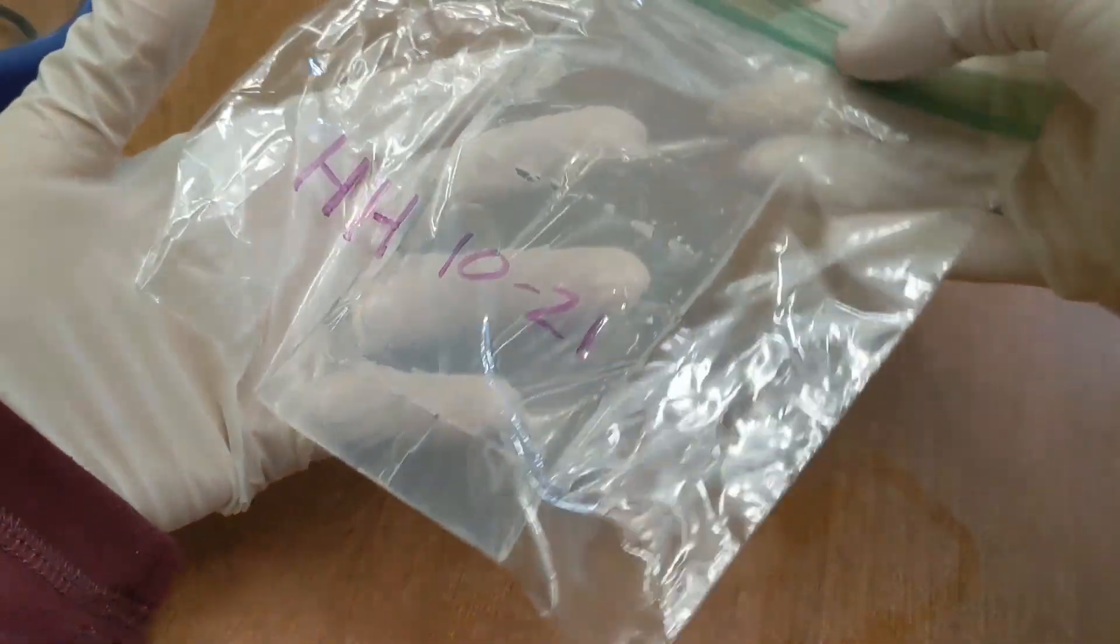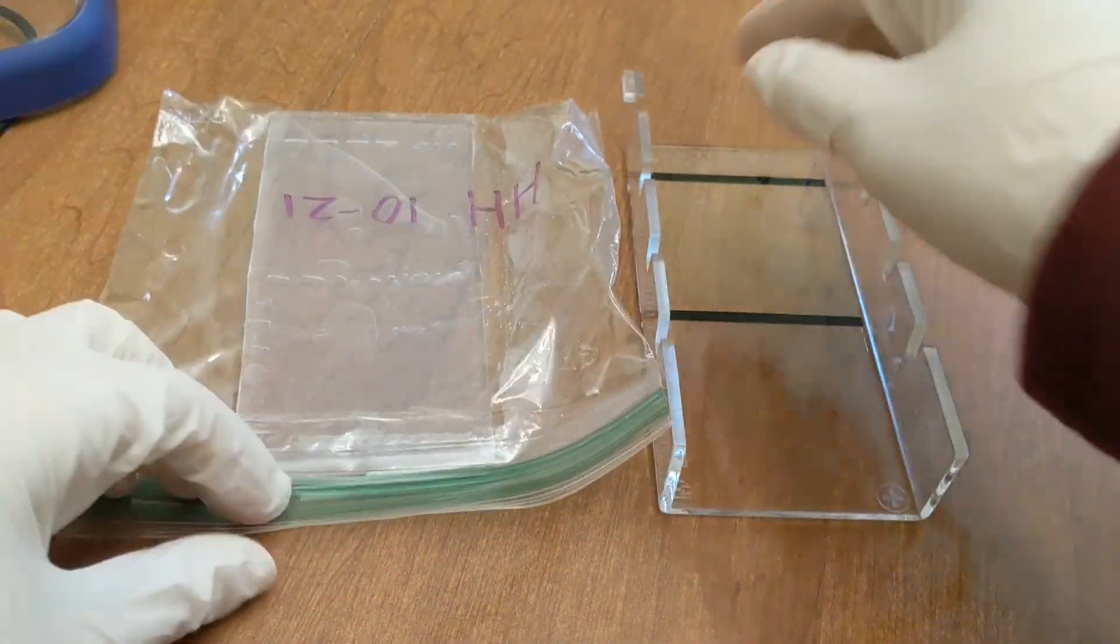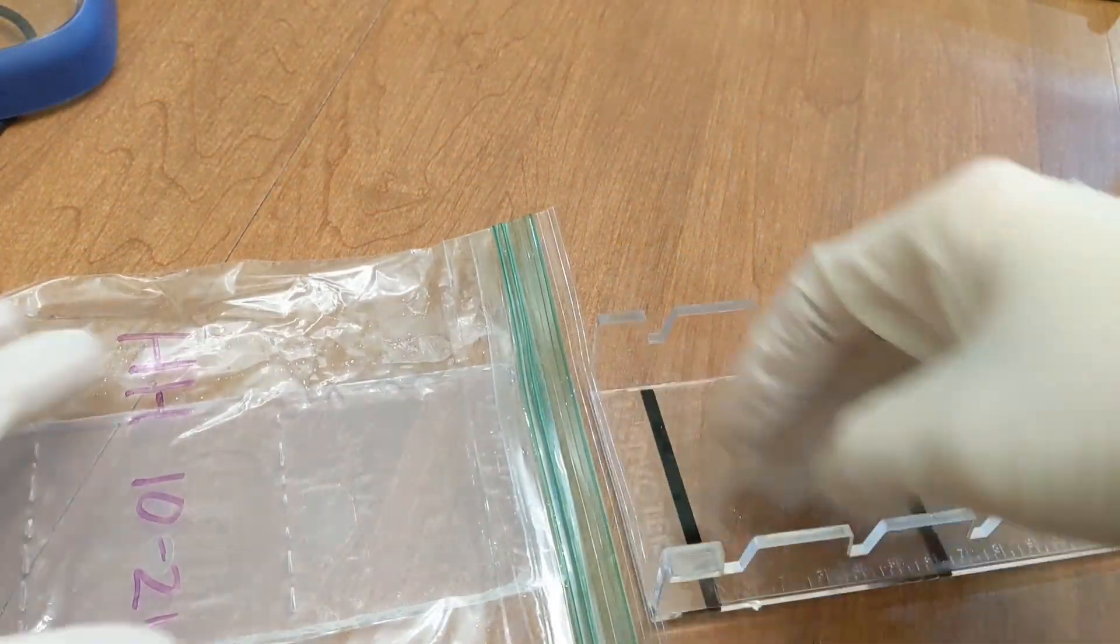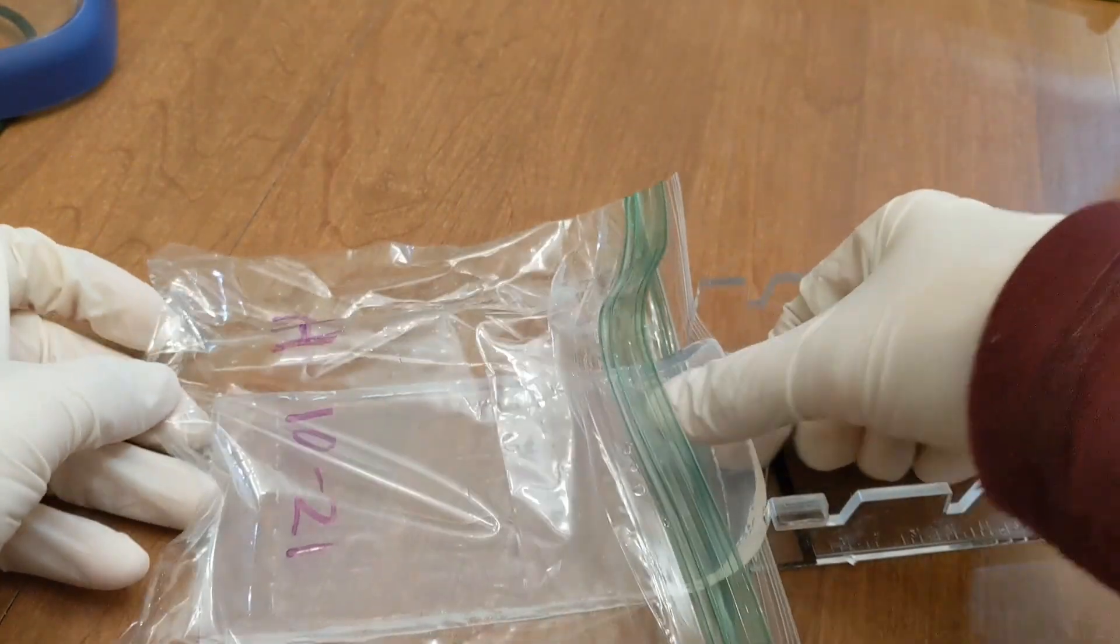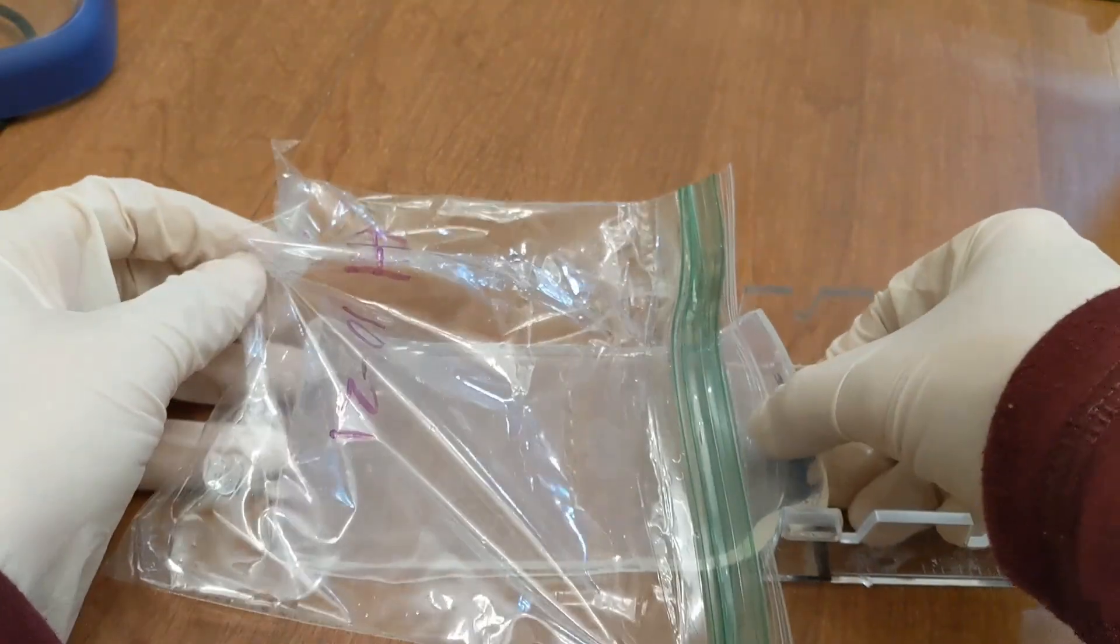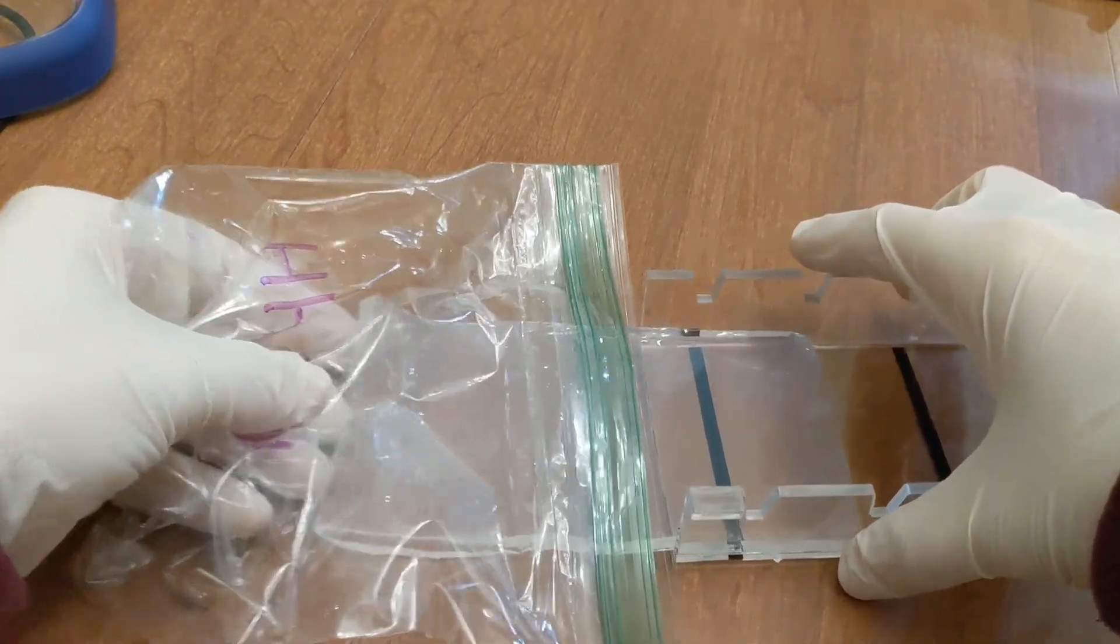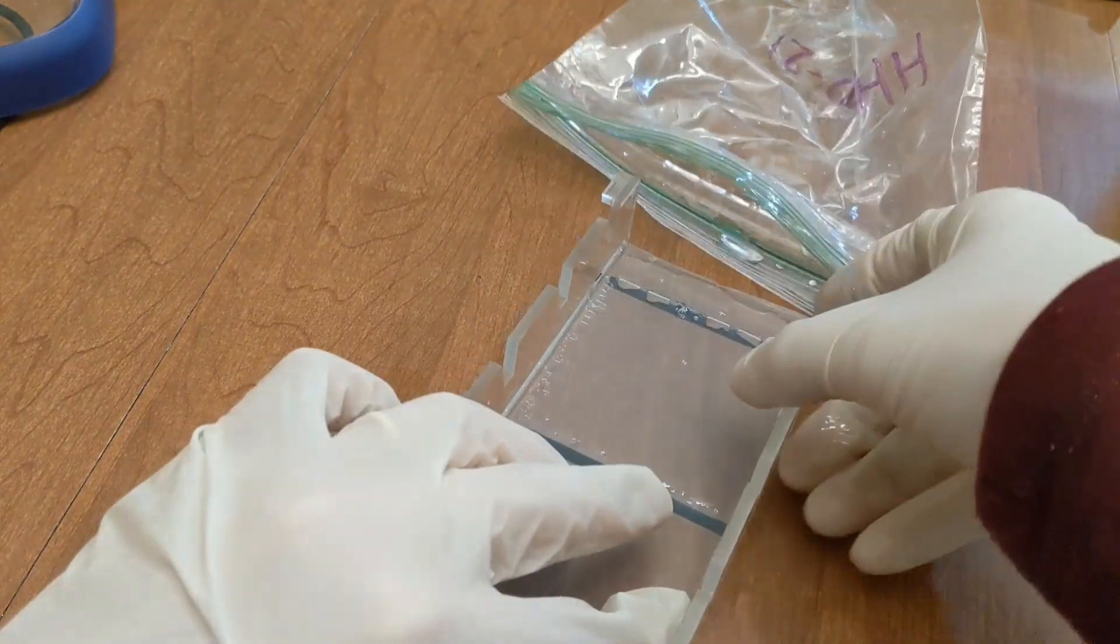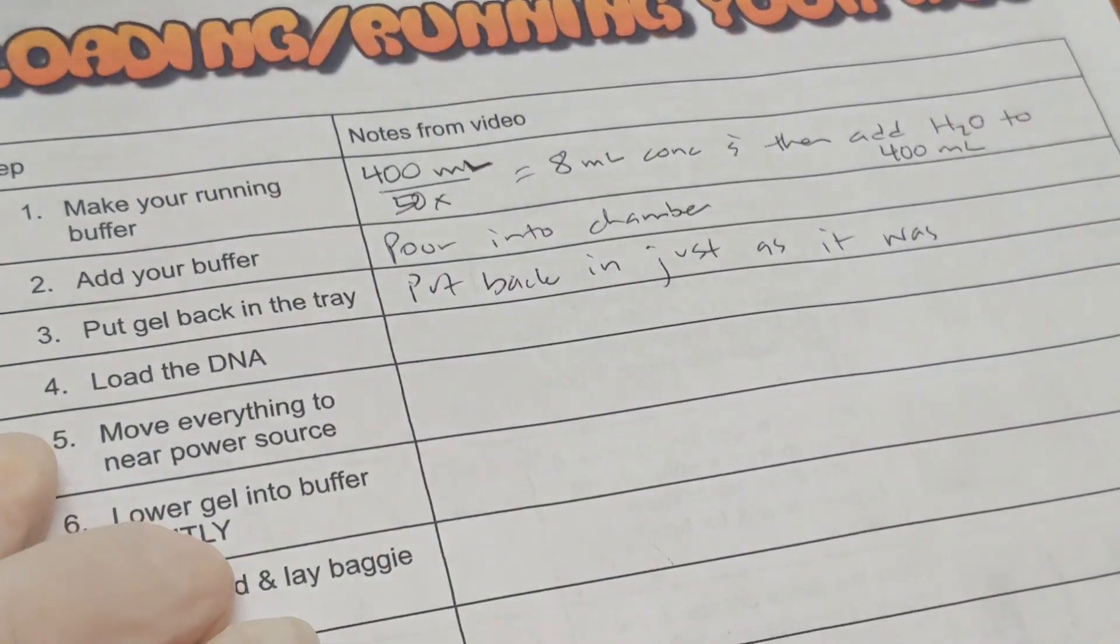So I have the gel. I'm gonna keep it very flat. I'm gonna turn it so that it matches the orientation of my gel tray. It's important that the wells go back where they were previously. And then keeping it as flat as possible, you just want to slide it out of the bag and back into the gel tray. Remember to make sure you have gloves on when you do this. So your note, put back in just as it was.